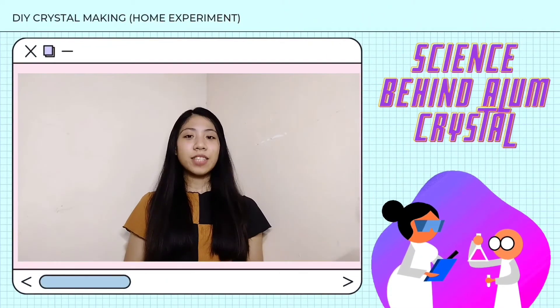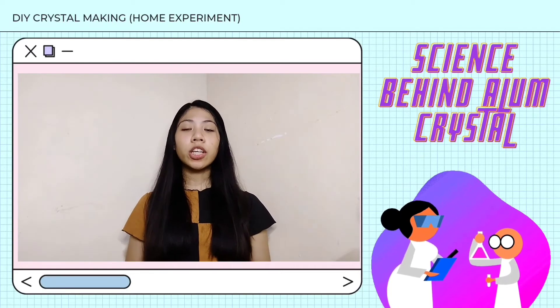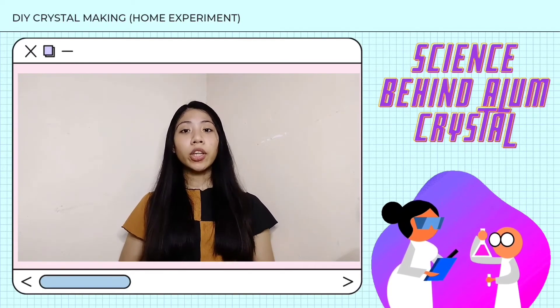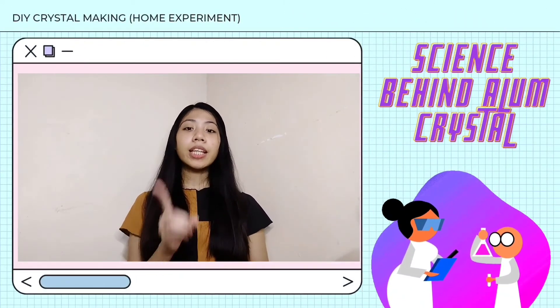So, what's the science behind that? Supersaturated solution can produce crystals such as alum. It is one in which the water or another solute is forced to hold more alum than it would normally. Heat and pressure can be used to create this solution.